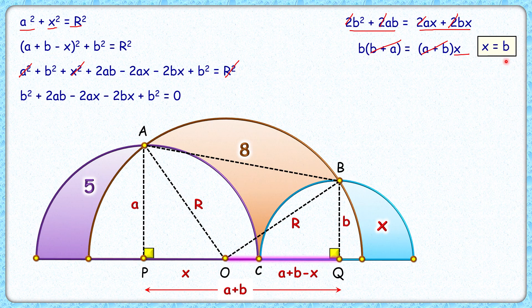So if X is B centimeters, if we put this value of X in the first equation, we'll get A squared plus B squared equals R squared.